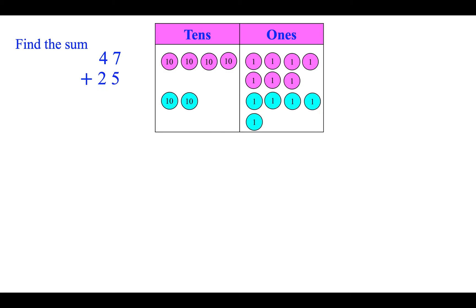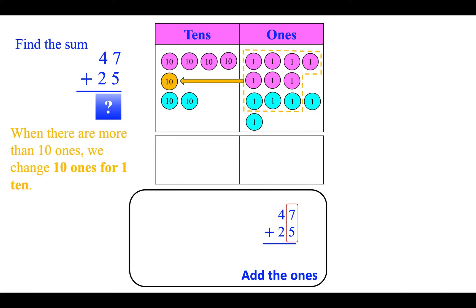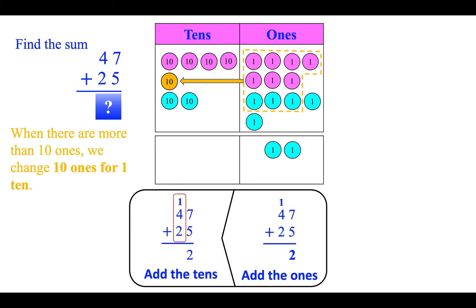First we add the ones: seven plus five is twelve. When there are more than ten ones, we change ten ones for one ten — we add one ten to the tens place; now we are left with two. Next we add the tens: one plus four plus two is seven.